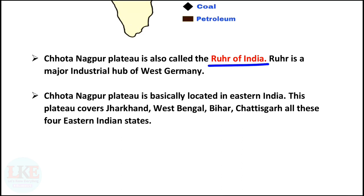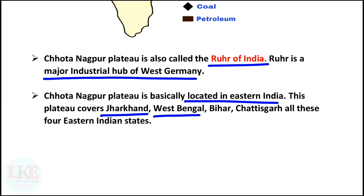Ruhr is the major industrial hub of West Germany. Chotanagpur Plateau is basically located in Eastern India. This plateau covers Jharkhand, West Bengal, Bihar and Chhattisgarh — all these four Eastern Indian states.